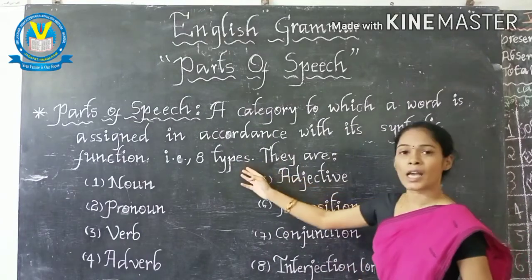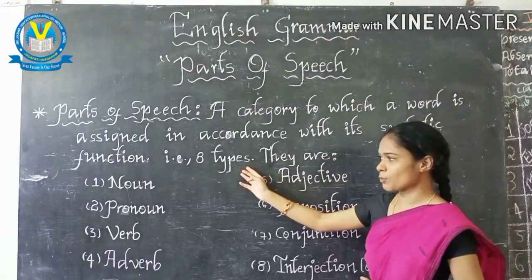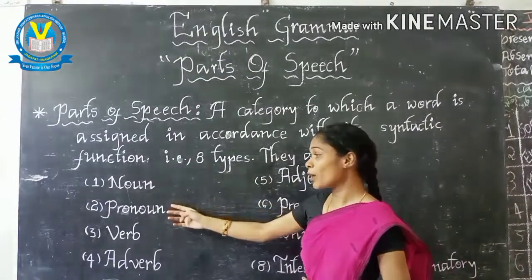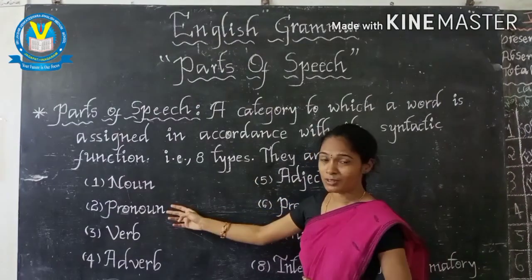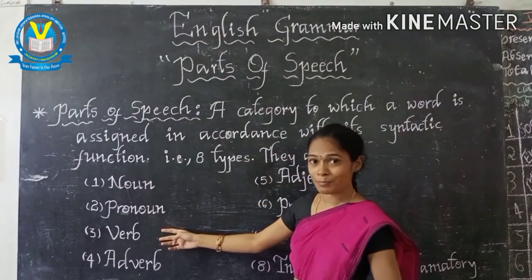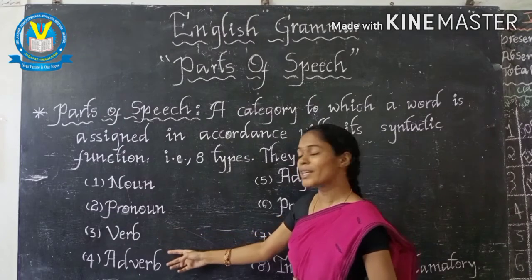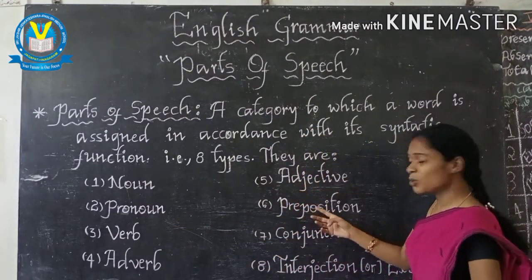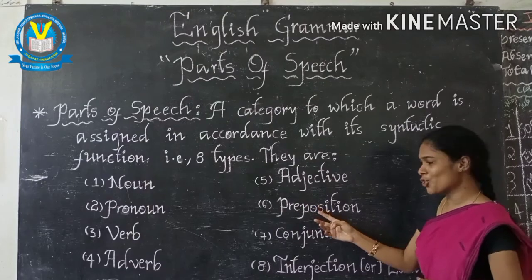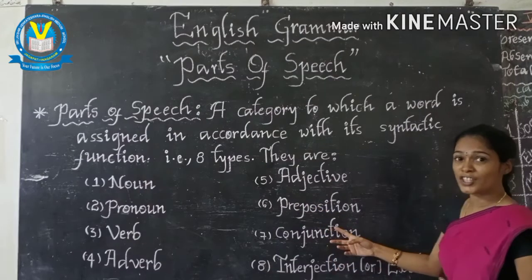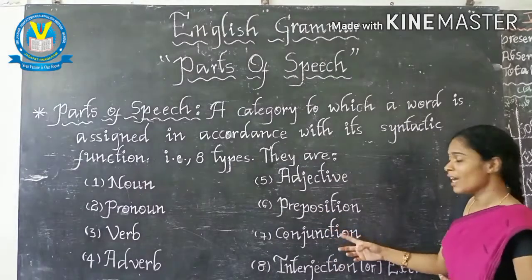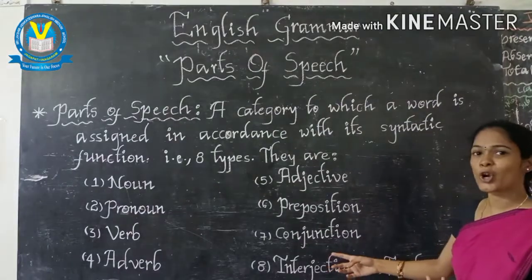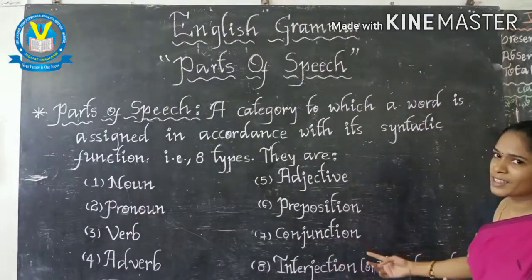We have eight types of parts of speech. The first one is noun. Second one is pronoun. The next one is verb. Fourth one is adverb. Fifth one is adjective. The next one is preposition. The next one is conjunction. And the last one is interjection, which is also called as exclamation.